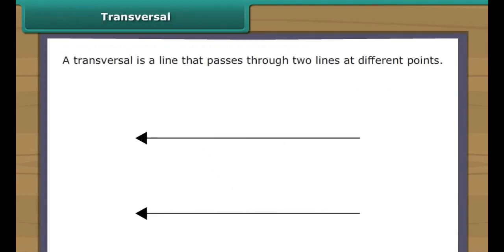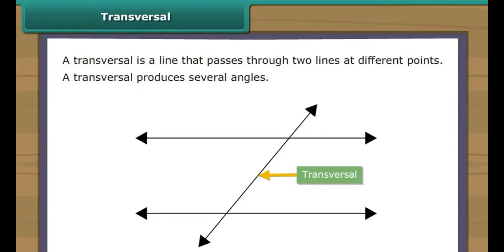Transversal. A transversal is a line that passes through two lines at different points. Mostly, a transversal produces several angles.